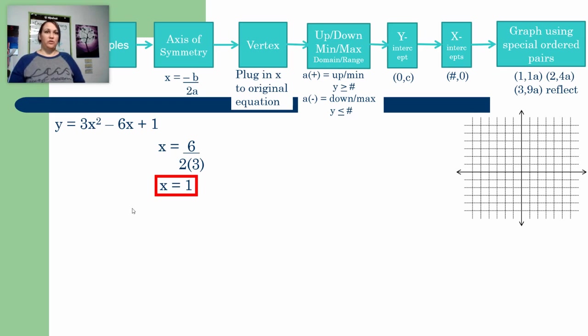Once you have your axis of symmetry, you can graph it over here if you want. So at the 1 on the x, we're going to draw a nice vertical line. It's a dotted line, or you can draw it with a highlighter. And then we're going to use our axis of symmetry to find our vertex. So I'm going to take the number 1, and I'm going to plug it in everywhere I see a letter x. And then I'll solve for y.